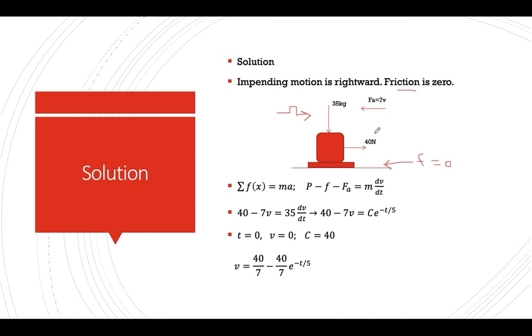And then the air resistance should also be directed opposite to the impending motion. And it is stated that it is 7 times the velocity. So if v is the velocity, then the air resistance is 7 times v.